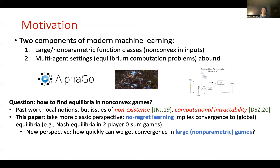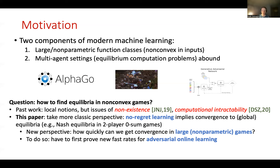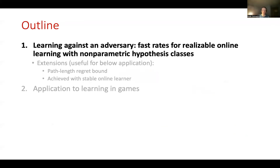Results showing regret bounds and convergence to equilibrium have been very common in the last several decades. But we're going to look at a slightly different question: how quickly can we get convergence of regret in large or nonparametric games? To do so, we'll consider the setting of adversarial online learning and prove some fast rates for that setting in order to get convergence rates for learning in games. I'll begin by discussing our results on learning with an adversary, and then discuss applications to learning in games.